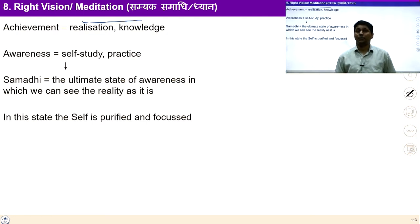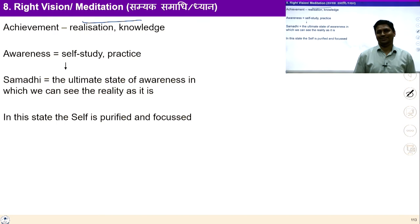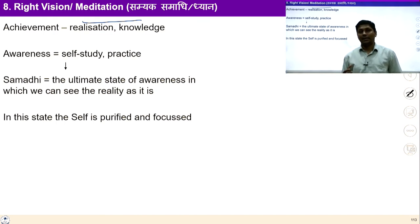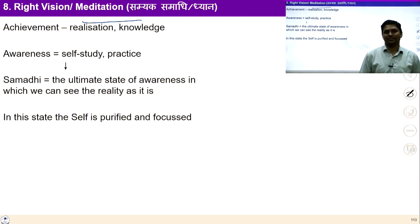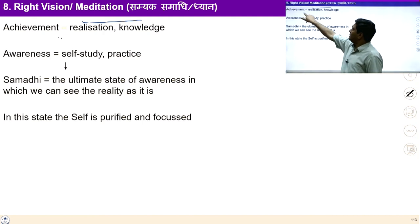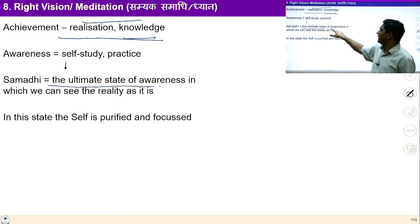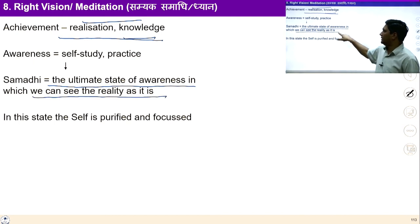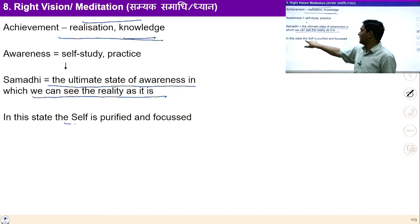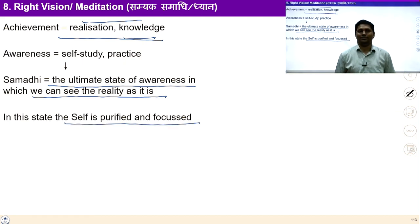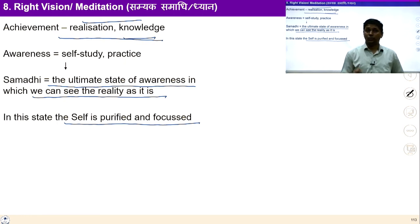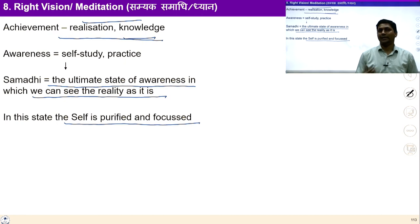With the help of these eight steps we are able to see things in totality. These eight steps are connected with a cyclic process and complementarity with everyone. Right vision means achievement, realization, knowledge. Samadhi is the ultimate state of awareness in which we can see reality as it is continuously. In this state the self is purified and focused — this is our goal. All these steps have been briefly identified as the Noble Eightfold Path — identified as wisdom and knowledge.